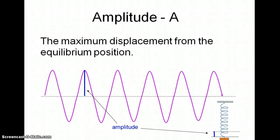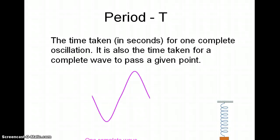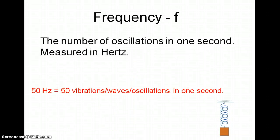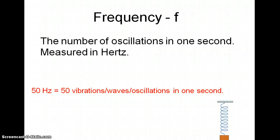The amplitude is the maximum displacement. The period is the time taken for one complete oscillation — so that's one complete up and down, and one complete down and up. The frequency is the number of oscillations, or the number of vibrations in one second, or the number of waves that pass a point in one second.